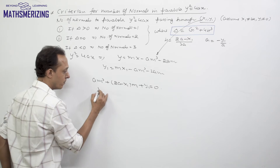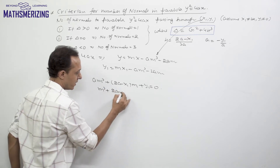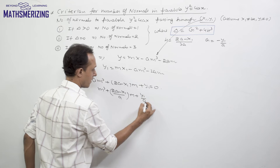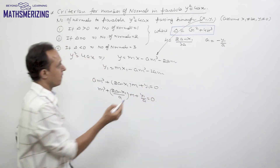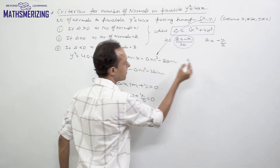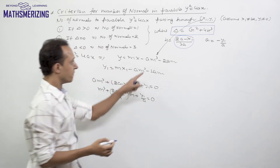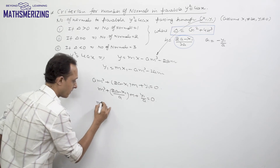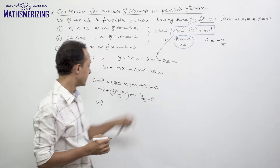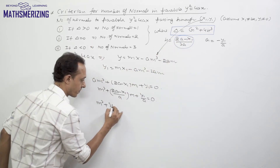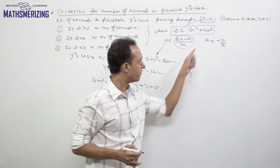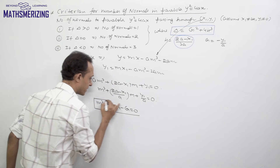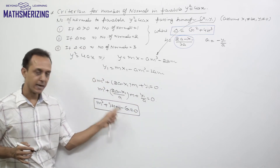We substitute h and g into the equation. Since (2a − x₁)/a = 3h and y₁/a = −g, the equation becomes m³ + 3hm − g = 0. So the number of normals through (x₁, y₁) corresponds to the number of real roots of this cubic equation.